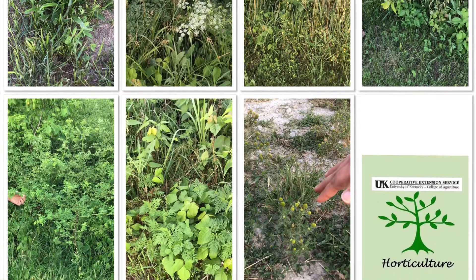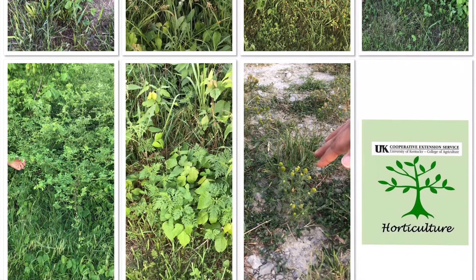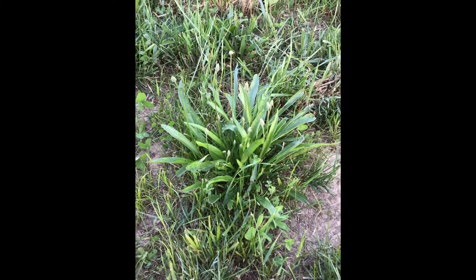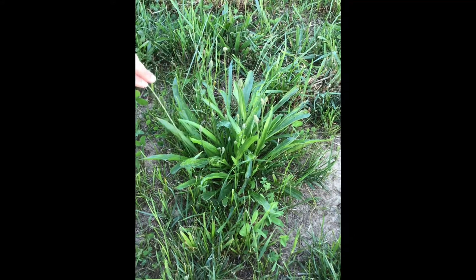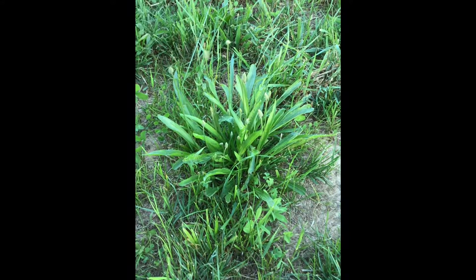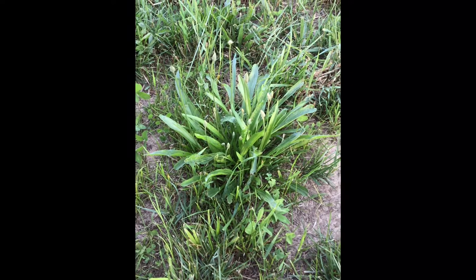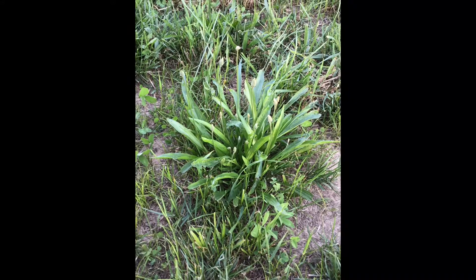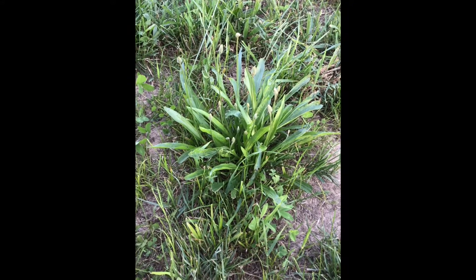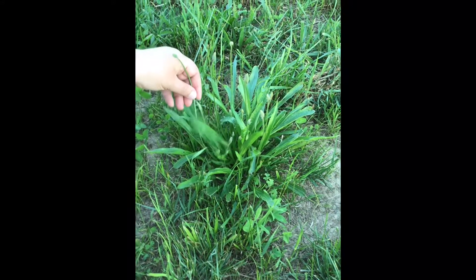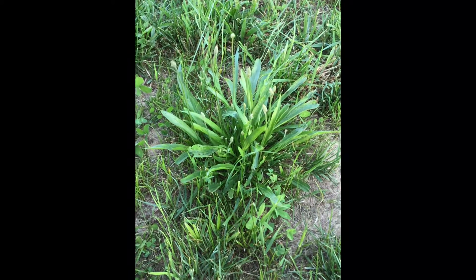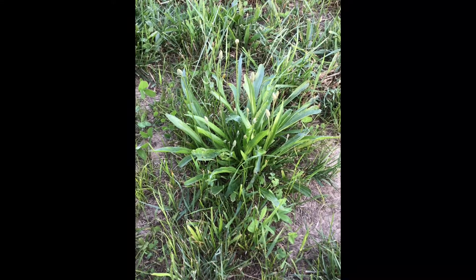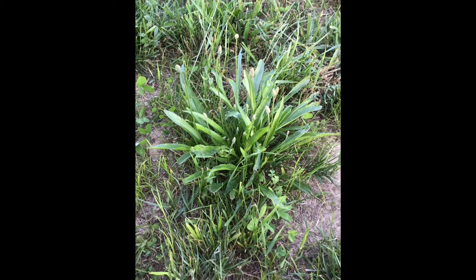Hi, I'm Loralee Kunze, a horticulture agent at the Bullock County Extension Service. We're out here doing a little bit of weed ID, and this plant you see in front of you right here is buckhorn plantain. It's one of the two prevalent plantains in Kentucky. It is an edible plant — if you're into edible plants, just make sure you get it from a clean source. These are often found in home lawns and can be taken care of with a broadleaf weed killer, or you can just dig up the plant if you get it early enough and throw it in a salad.